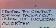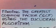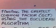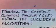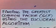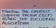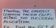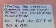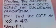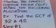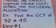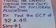Today we are going to learn how to find the greatest common factor using the Euclidean algorithm. I will teach you how. Example: let us find the GCF, or the greatest common factor, of 32 and 48.